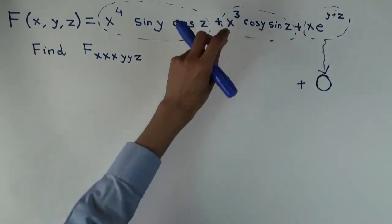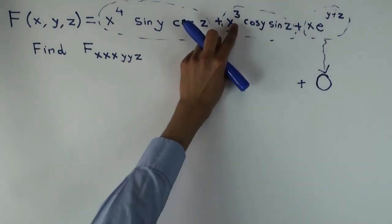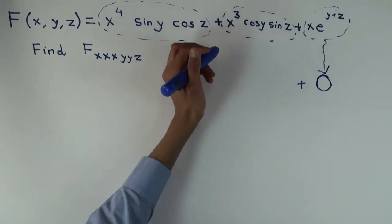What about this one, x cubed? What happens when you differentiate x cubed three times? Six. So you get three x squared, then you get six x, then you get six.